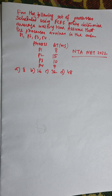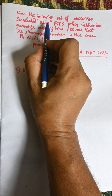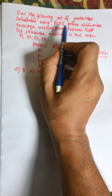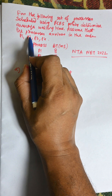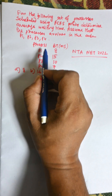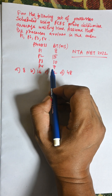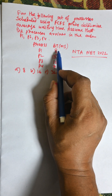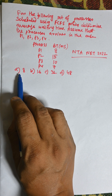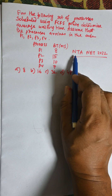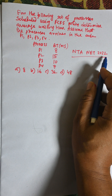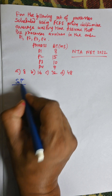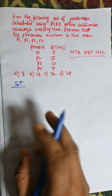In this video I am going to solve the following problem: for the given set of processes scheduled using First-Come First-Served policy, determine the average waiting time. Assume that the processes arrive in the order P1, P2, P3, P4. Arrival time is not given, so it can be considered as 0 for all processes. Burst times are given and we need to find the average waiting time. This is a question from NTA NET 2022.